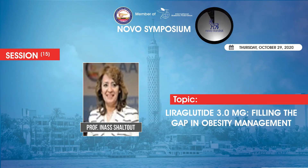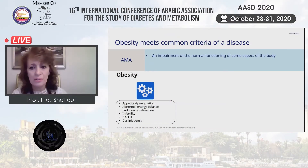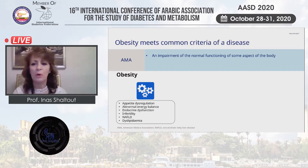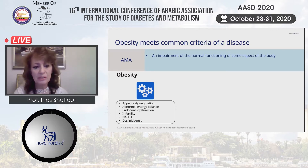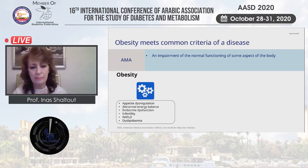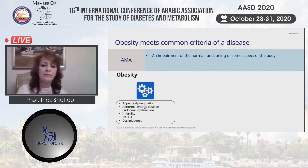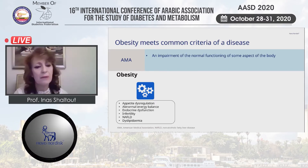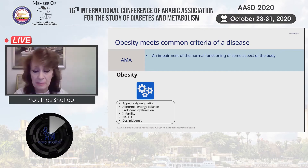According to the American Medical Association, obesity is a disease which is an impairment of the normal functioning of some aspects of the body. This is clear in obesity, where we can find appetite dysregulation, abnormal energy balance, endocrine dysfunction, infertility sometimes, and most of the time there is dyslipidemia.